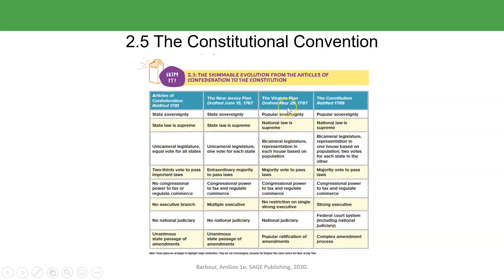The large state plan, called the Virginia Plan, called for national law to be supreme, a bicameral legislature, and a majority to pass laws. They wanted to restrict the executive to one individual and have a strong executive, and also to have a national judiciary bench.